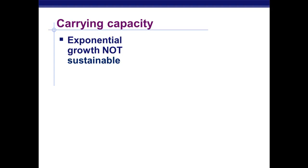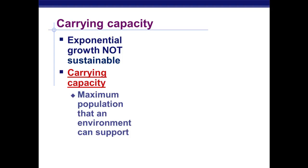Even temporary exponential growth can't go on forever, because eventually food or space will run out — exponential growth is not sustainable. Eventually, when you hit that limit, the amount of individuals an area can support is called the carrying capacity.